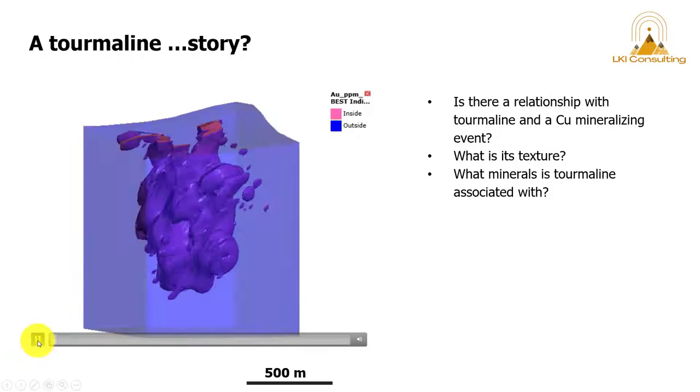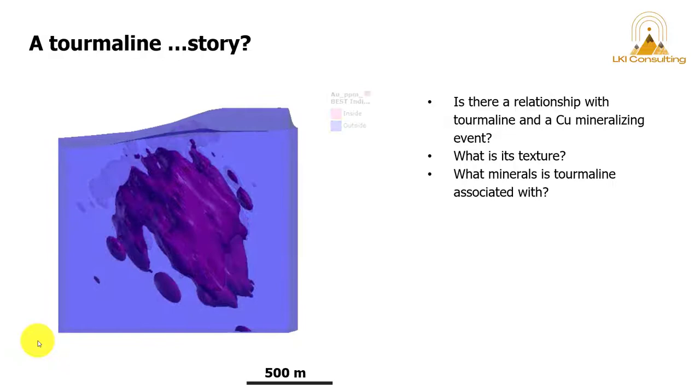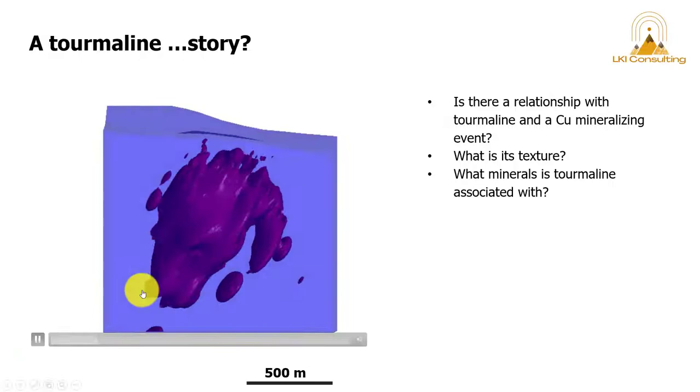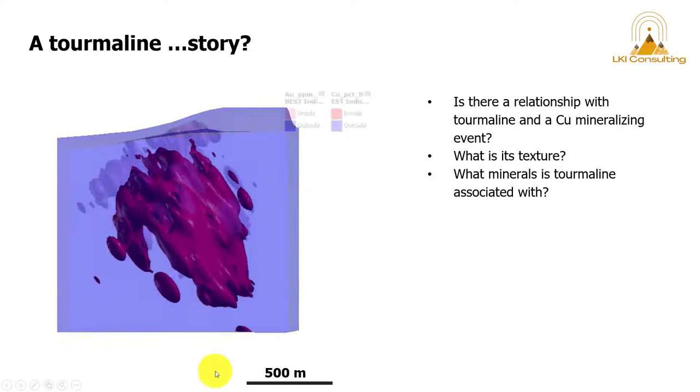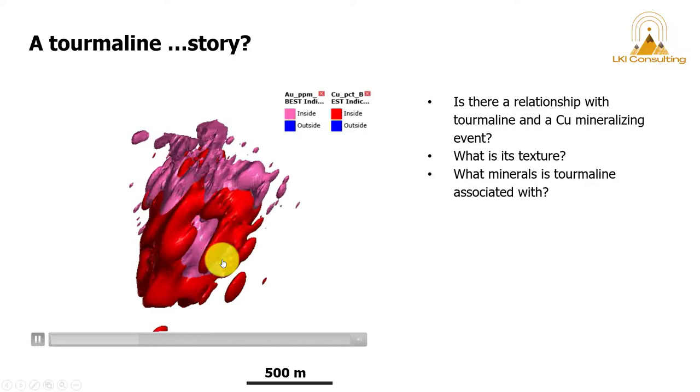So here we have the gold vests from Leapfrog and this is the copper shell. Everything inside is in dark red. Everything on the outside of that copper shell is in this blue color. And these are the two shells together, pink is gold and red is copper.